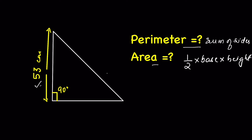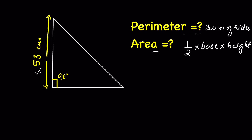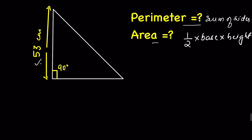To find the perimeter as well as the area, we need to find the other two sides. Since this is a right angle triangle, we can use the Pythagorean theorem. The Pythagorean theorem says that the sum of the squares of two sides is equal to the square of the hypotenuse. Let's say this is triangle ABC, and side BC is lowercase b.